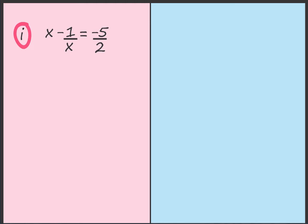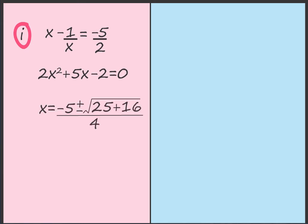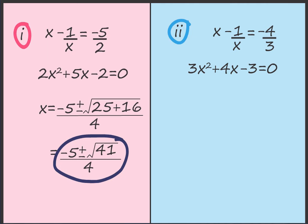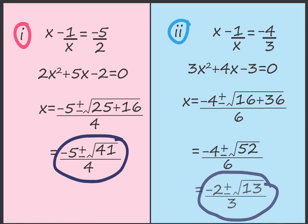The sum is not done. We substitute a equals x minus 1 by x back. Equation 1: x minus 1 by x equals minus 5 by 2, giving 2x squared plus 5x minus 2 equals 0, so x equals minus 5 plus or minus root of 41, upon 4. Equation 2: x minus 1 by x equals minus 4 by 3, giving 3x squared plus 4x minus 3 equals 0, so x equals minus 4 plus or minus root of 52, upon 6, which simplifies to x equals minus 2 plus or minus root 13, upon 3.